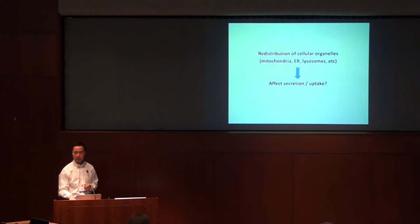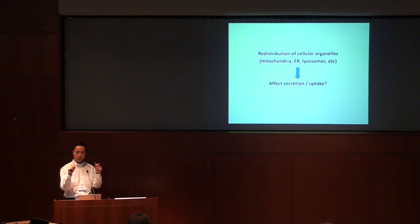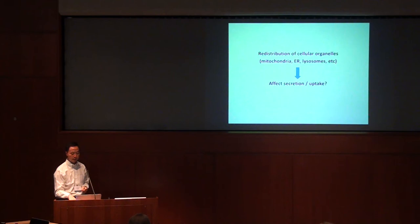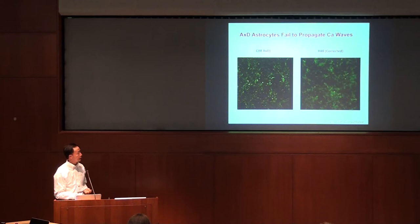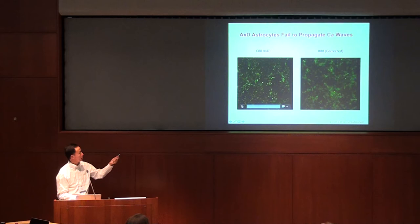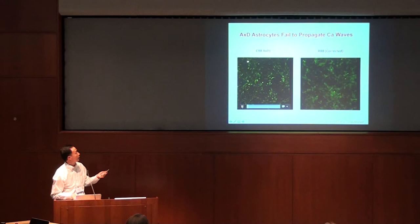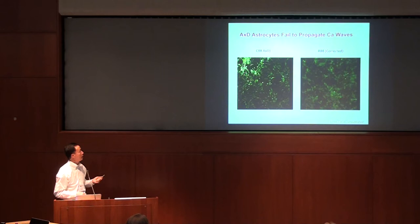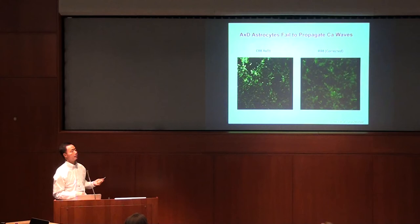That really leads us to the next question: what are the functional consequences? I'm going to give you one example. We look at one function — as I mentioned, astrocytes talk to each other using signaling molecules like calcium transmitters. Normally when we stimulate the cells, we use a green fluorescent dye and the signal can travel through. For example, we hit in the upper left corner in the patient cells, and it should travel through — but it stays there and doesn't go any further. The signal just stays there and does not talk to the next cell.